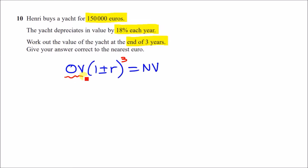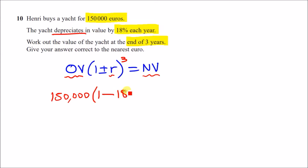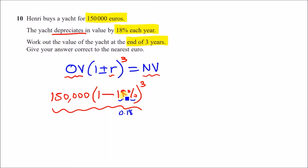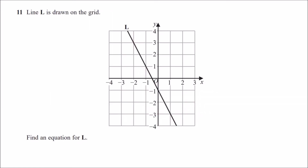The original value is 150,000. Since the yacht depreciates — decreases — we use minus: 1 − 0.18, all to the power of 3. If it increased or compounded, it would be a plus. Enter 150,000 × (1 − 0.18)³ into your calculator and you get a final answer of €82,705 to the nearest euro.